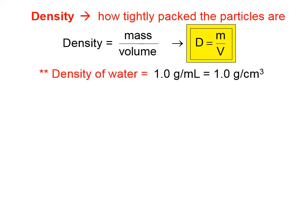You should probably memorize that the density of water is 1.0 gram per milliliter. And since a milliliter is a cubic centimeter, the density of water is also 1.0 gram per cubic centimeter.